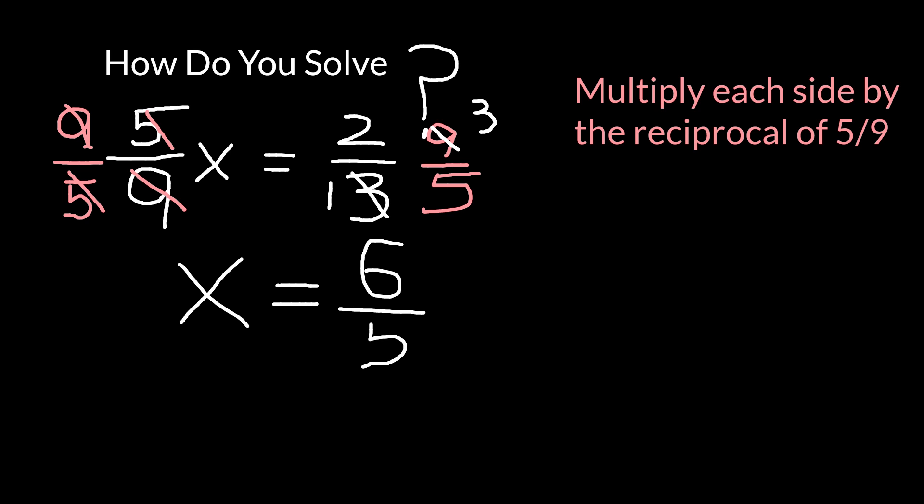So the answer is six fifths, which is equal to one and one fifth because five goes into six one whole time. Hence the whole number of one with one left over, hence the one fifth.